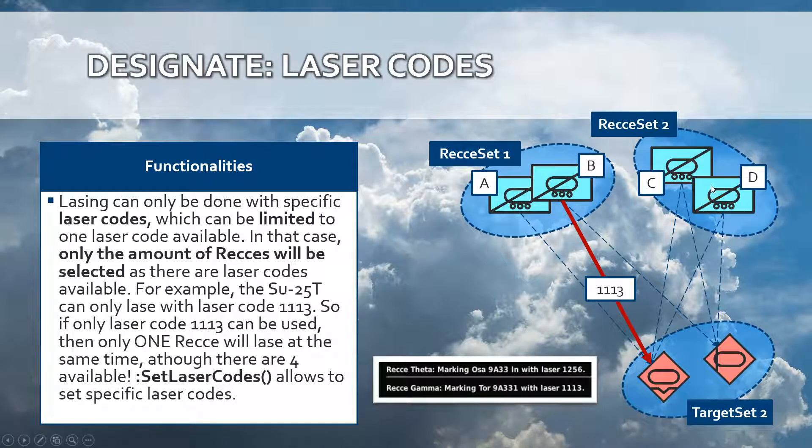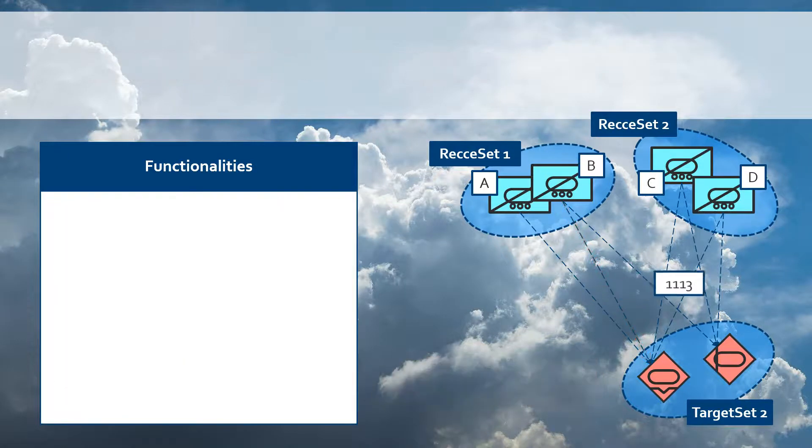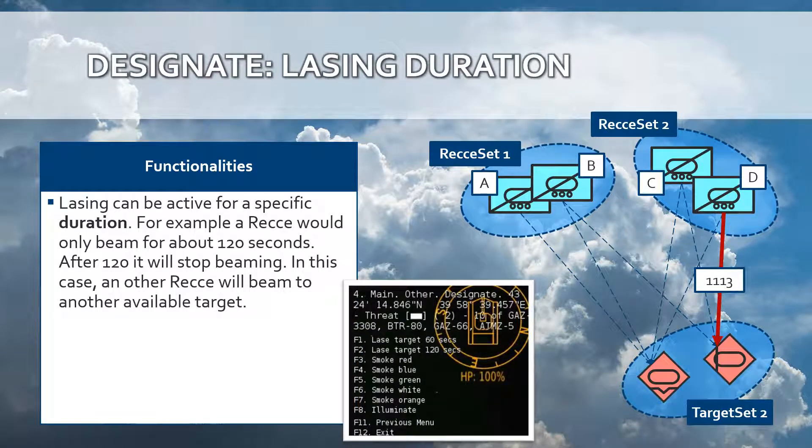You want to say, for example, this set of laser codes is for designation object 1, and that set is for designation object 2. That is important because otherwise pilots would get confused where all these lasers are coming from. A laser can be activated for a certain duration. In this example, it is set to 60 seconds and 120 seconds. The player can select how long a laser should be activated for a reconnaissance or for a target set designation.